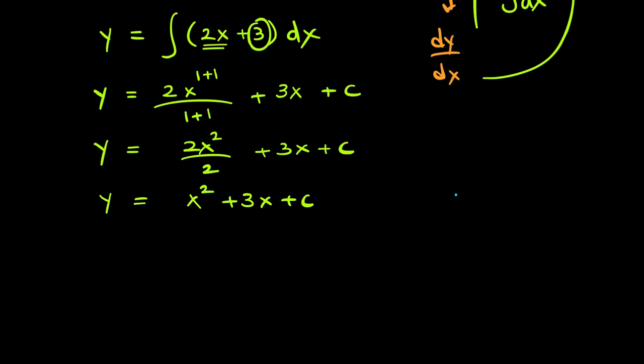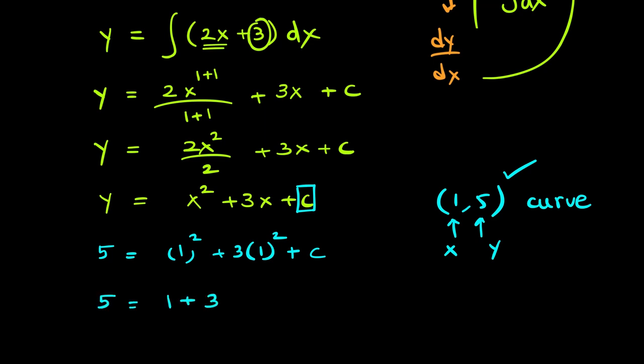Now, we know that the point (1,5) is on the curve. That means this is the x value, this is the corresponding y value. We will use this particular point to evaluate c. So, y is 5, x is 1, 1 square plus 3 times 1 plus c, c is unknown. 5 equals 1 plus 3 plus c, 5 equals 4 plus c, make c the subject, that comes out to be 1.